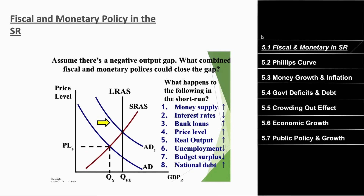Unit 5 is more or less talking about fiscal and monetary policy and the effects of fiscal and monetary policy on the economy as a whole. Fiscal and monetary policy can reduce a negative output gap or recessionary gap, or reduce an inflationary gap. In this graph we have aggregate demand, short-run aggregate supply, and long-run aggregate supply. Right now we have a recessionary gap because the aggregate demand curve is below the long-run aggregate supply curve, so we would use expansionary fiscal or expansionary monetary policy to increase aggregate demand to the long-run aggregate supply, reducing the negative output gap.